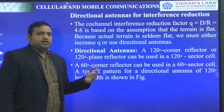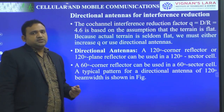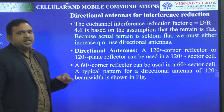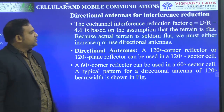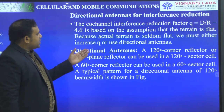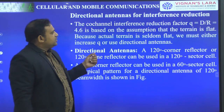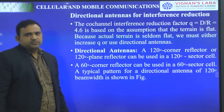Previously, you need to have taken the assumption Q equal to 4.6, with respect to terrain being flat — the coverage area is flat. But since the actual terrain is not always flat, we must either increase Q or use directional antennas.